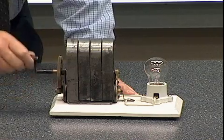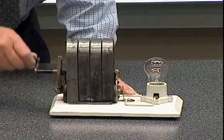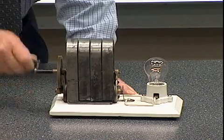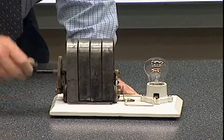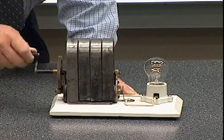If I turn it slowly, then I get a dim glow on the light globe indicating a small voltage and a small electric field created because the magnetic field is not changing as rapidly.